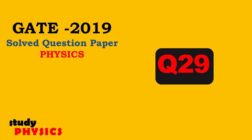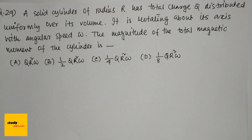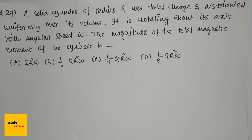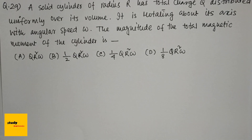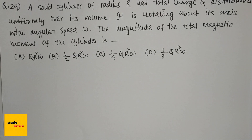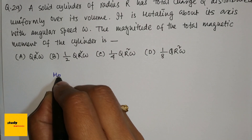Hi everyone, welcome to Study Physics. Here's question number 29: a solid cylinder of radius r has total charge q distributed uniformly over its volume. It is rotating about its axis with angular speed omega. The magnitude of the total magnetic moment of the cylinder is — and these are the four options.